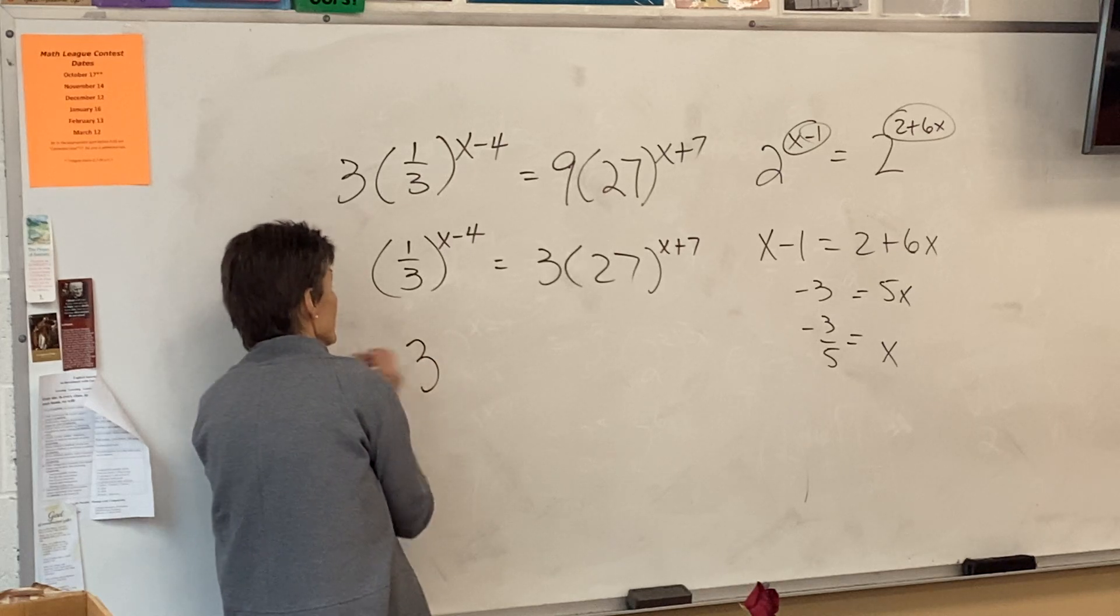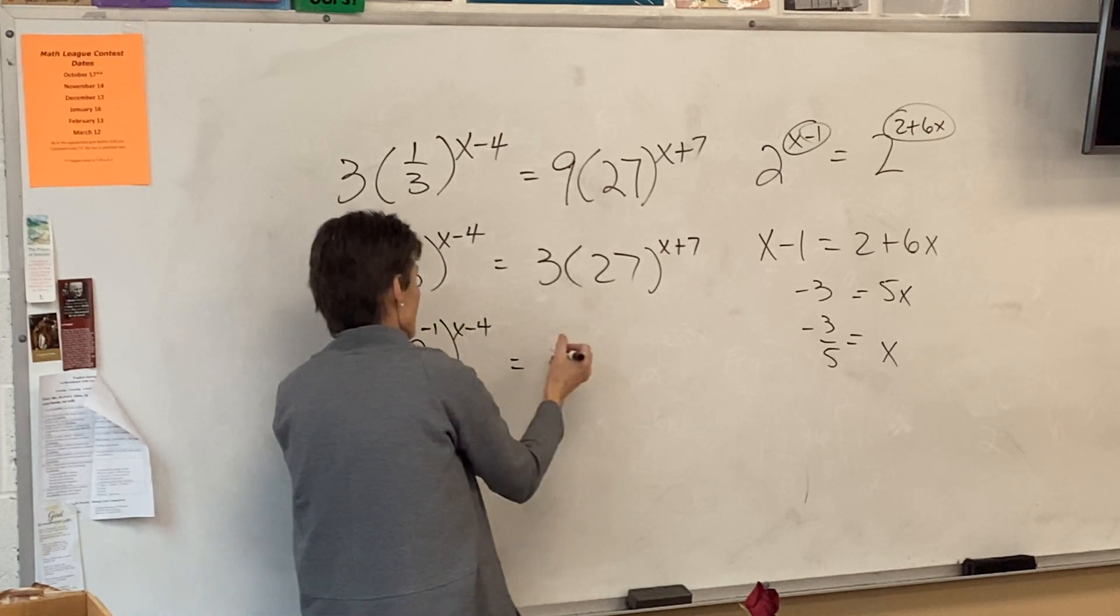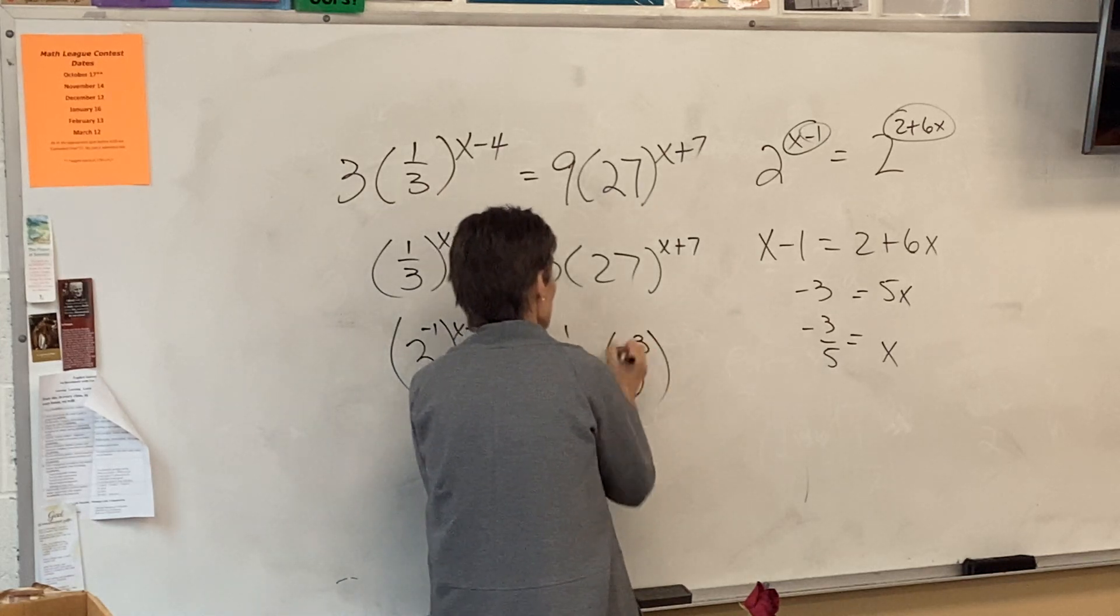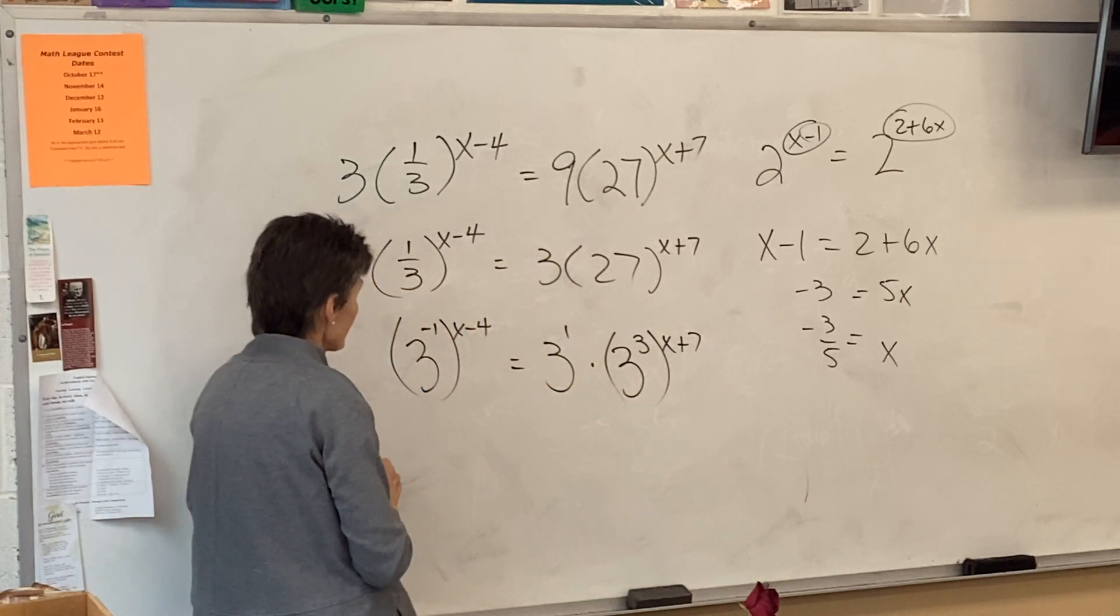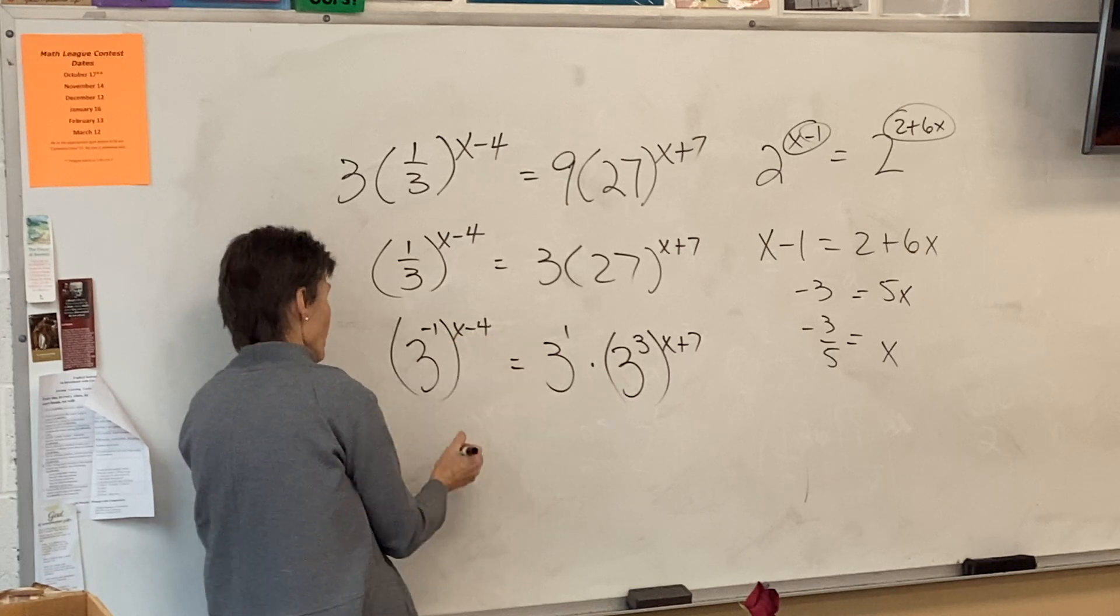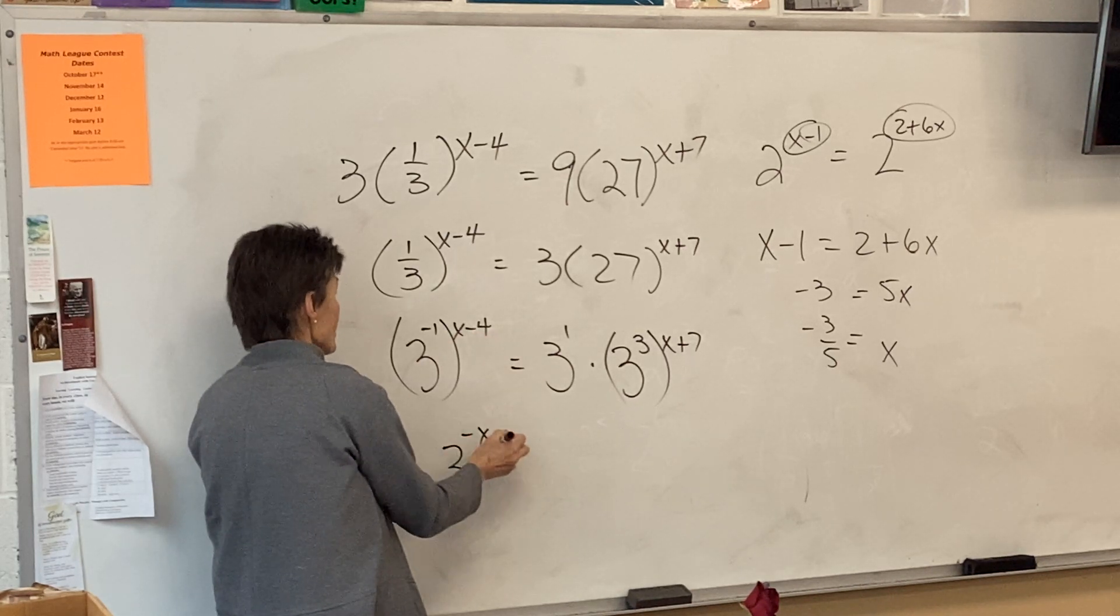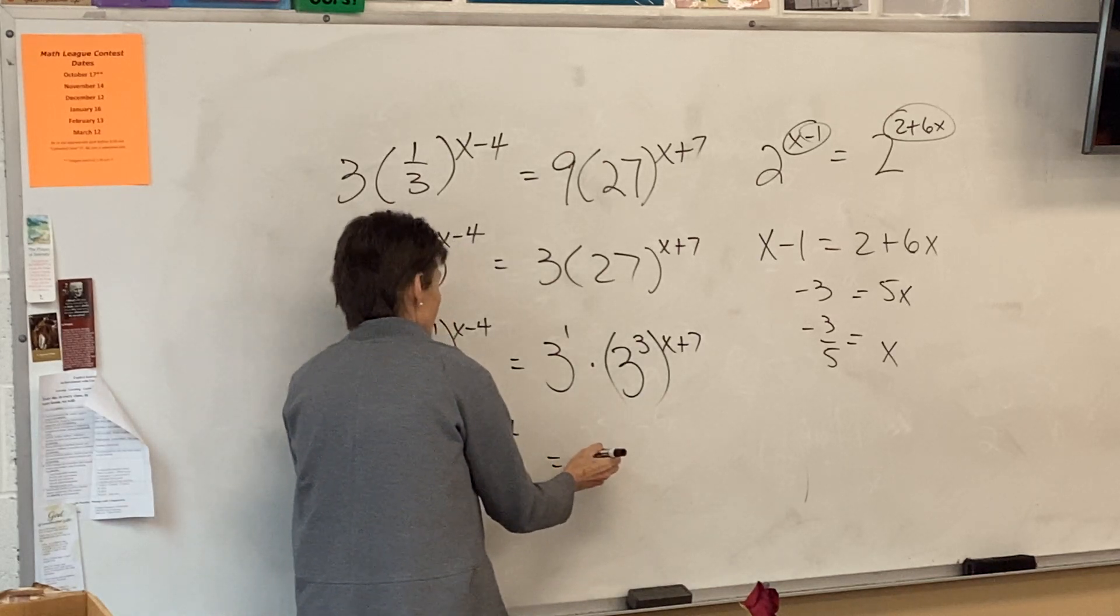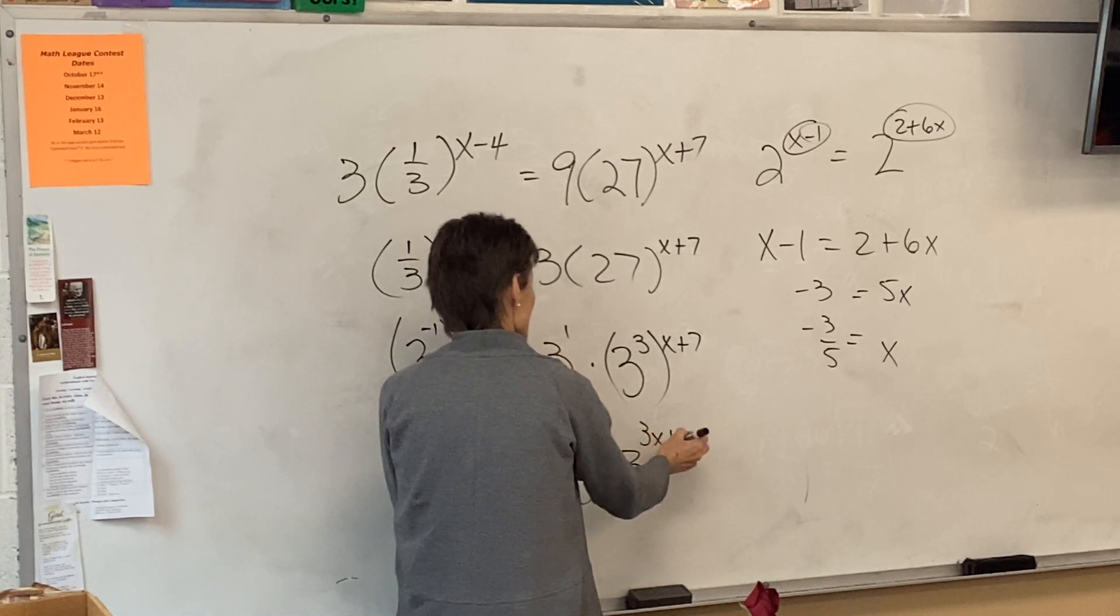Now, if you're going to make all the bases the same, you already said they're all powers of 3. What's 1 third? 3 to what power? Negative 1. And that's 3 to the 1st. And that's 3 cubed to the x plus 7. So what do I do when I have a double exponent? Multiply them. So negative x plus 4.